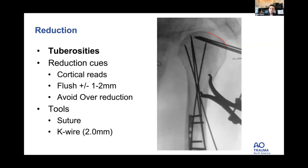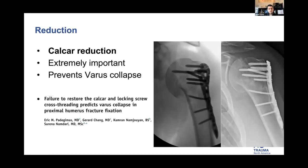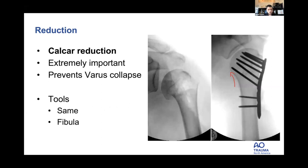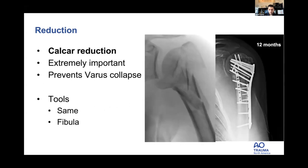Calcar reduction is very important. We did a study looking at how much reduction is necessary to prevent collapse. The tools for reduction are the same; you just want to make sure you're supporting them. Sometimes calcars can look quite gnarly, but the idea is getting them reduced anatomically with the various tools we discussed and then stabilizing them. Here on the right, a fracture that surely should have collapsed is completely stable in the same position.